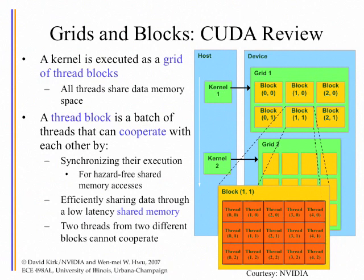All threads in the same block can cooperate — they can synchronize with each other and share very fast shared memory access within the block. Threads from different blocks would not be able to share data. We'll come back to this point tomorrow. This is just a quick review of the CUDA thread model.